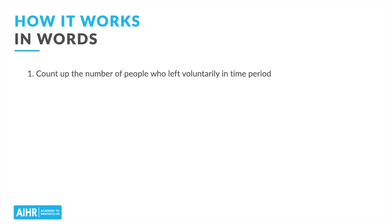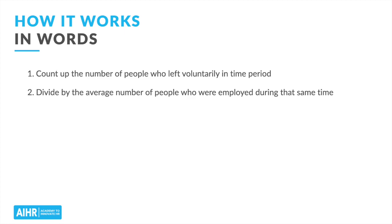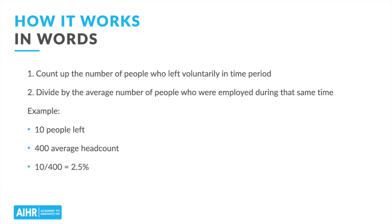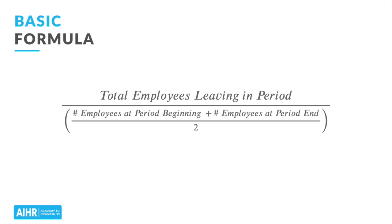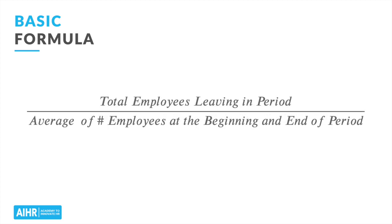So now here are the specific steps. First, count up the number of people who left voluntarily during the time period you're interested in. For example, if you want to calculate turnover for the last month, just count up the number of people who left during that month. Now for our second step: take the total number of voluntary departures and divide by the average number of people who were employed during that time period. So for example, if 10 people left the company in April and we had on average 400 employees during that same month, then our turnover rate would be 10 divided by 400, which works out to a 2.5% turnover rate for that month. In a formula, it looks like this. More compactly, we can say that we are dividing by the average of the number of employees at the beginning and the end of the period.